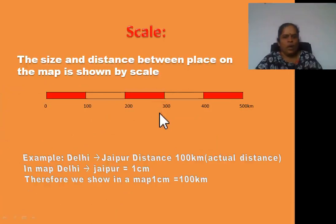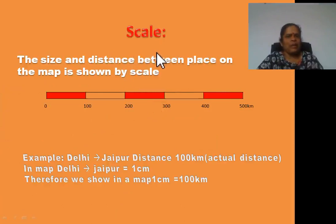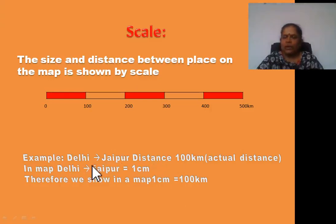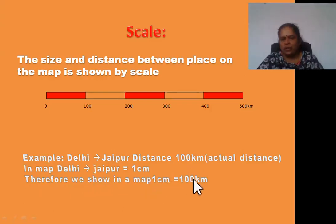Second point: language of a map — scale. Why do you use scale in a map? To show the size and distance between places on a map, we use a scale. For example, the distance between Delhi and Jaipur is 100 km. The actual distance is 100 km, but in a map we cannot draw 100 km. So we show in a map that 1 cm is equal to 100 km, meaning 1 cm on the map indicates 100 km in actual distance.